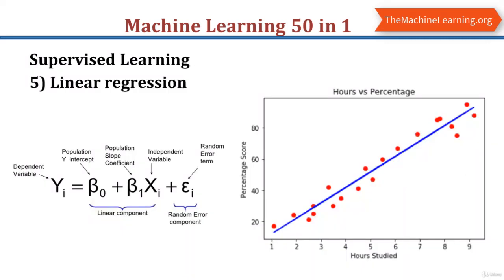The next topic is linear regression. Linear regression is a machine learning algorithm based on supervised learning. It is a linear model that assumes a linear relationship between input variable X and single output variable Y. When there is a single input variable, the method is referred to as simple linear regression. When there are multiple input variables, the method is referred to as multiple linear regression. The best-fit straight line is modeled based on the linear equation y = mx + c.